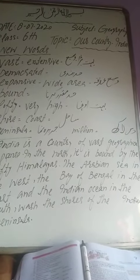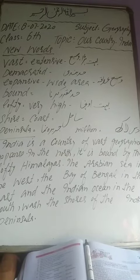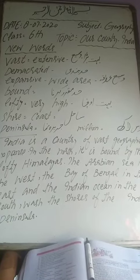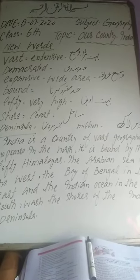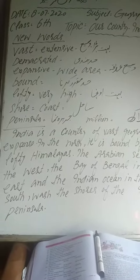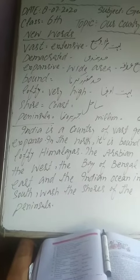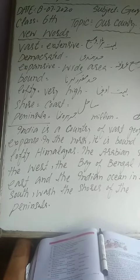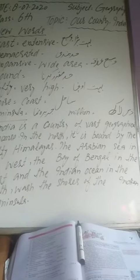New words: 'vast' means extensive, very wide area. 'Lofty' means very high. 'Shore' means coast, which we call Sahil — Sahil-e-Samundar. 'Peninsula' means Jazir Anama. 'Million' means ten lakh.